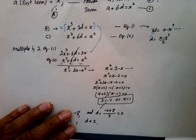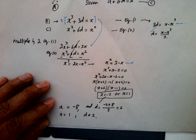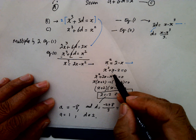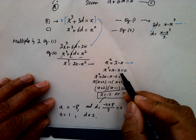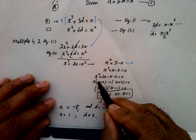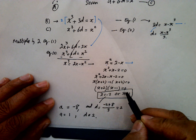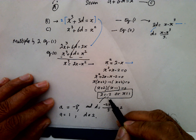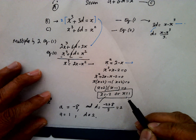Since it's a quadratic, we can find the roots. Rearranging: X squared plus X minus 2 equals 0. Factoring: X squared minus X plus 2X minus 2 equals 0, which gives X minus 1 times X plus 2 equals 0. So X equals 1 or X equals minus 2. These are the two roots.